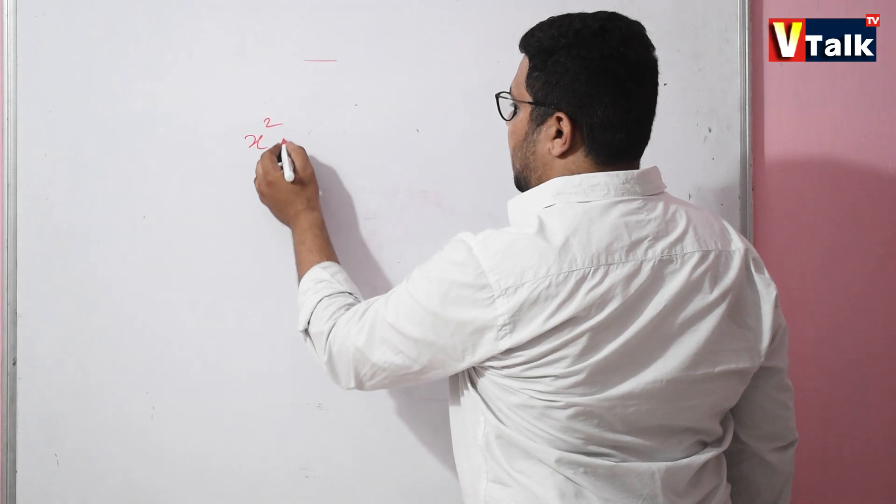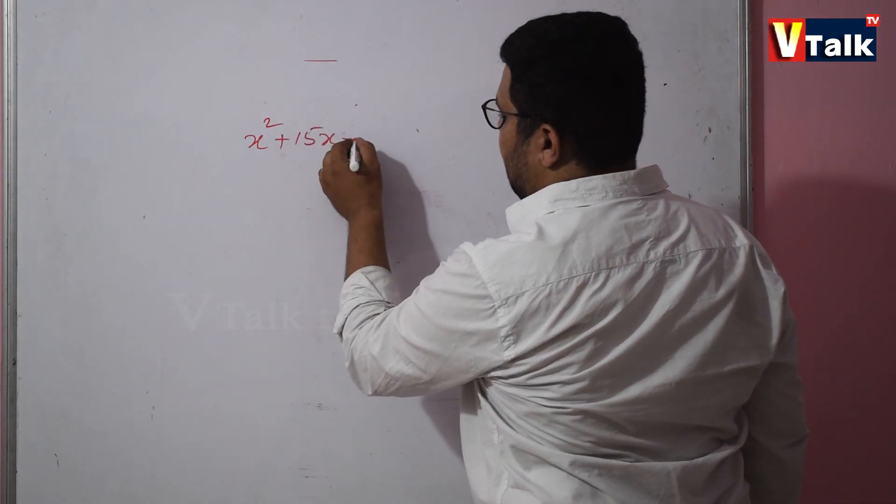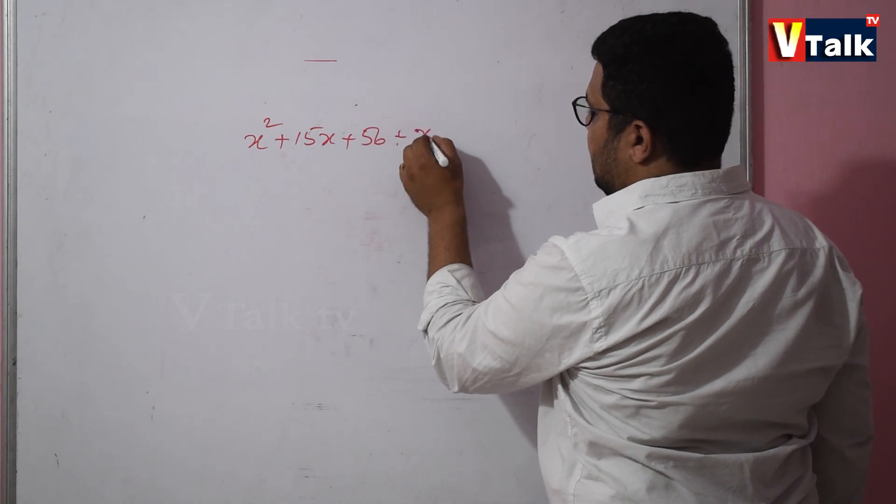For example, take this equation: x squared plus 15x plus 56 divided by x plus 7.